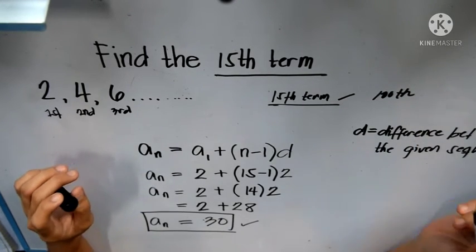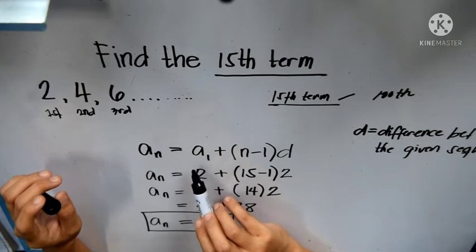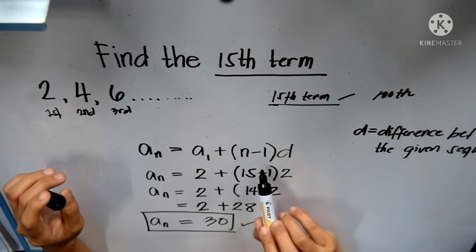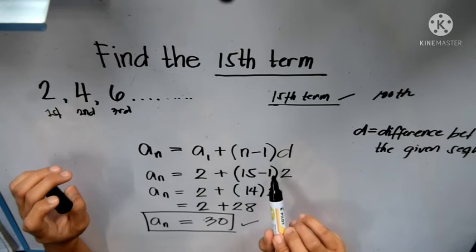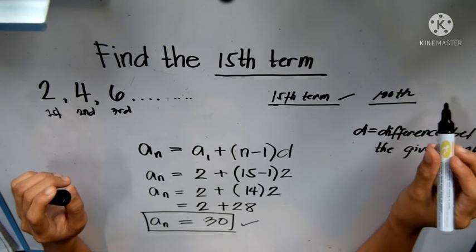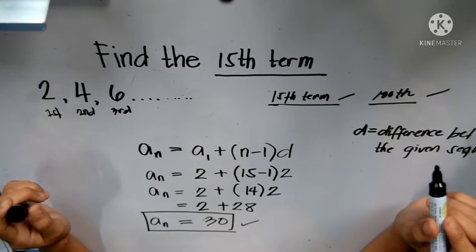It's very long to do that. So with our formula a sub n equals a sub 1 plus open parenthesis n minus 1 close parenthesis d, it is more easy to reach the 100th term if the problem asks the 100th term.